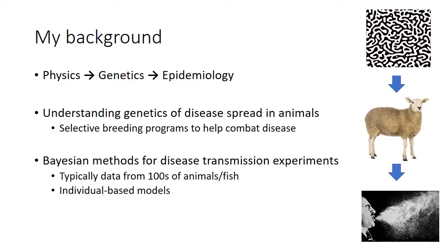I wanted to tell you a bit about my background prior to joining the RAMP Consortium. I actually did my degree in physics, and somehow find myself working on genetics in the Rosalind Institute in Scotland, most famous for Dolly the Sheep, and finally now I'm working in Biomathematics and Statistics Scotland in Edinburgh.